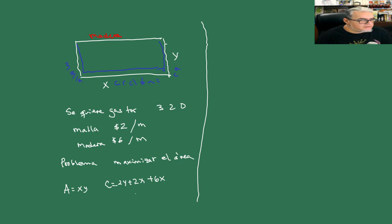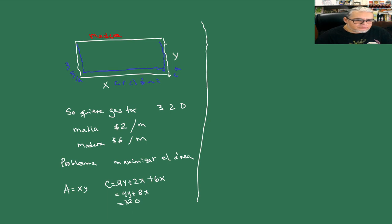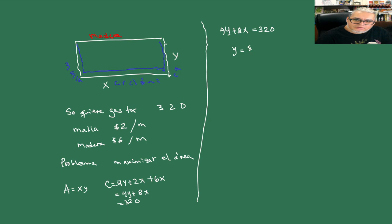Entonces el costo total es: 4y + 2x + 6x = 4y + 8x, y queremos que el costo sea exactamente 320. De aquí vamos a deducir una función para x y y: tenemos 4y + 8x = 320.